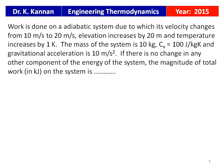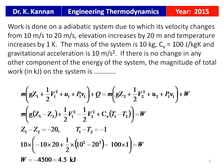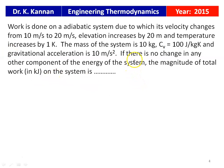This is again from the 2015 question paper. Work is done on an adiabatic system causing its velocity to change from 10 m/s to 20 m/s, elevation increases by 20 m, and temperature increases by 1 Kelvin. The mass of the system is 10 kg, CV = 100 J/kg·K, and gravitational acceleration is 10 m/s². The magnitude of total work done on the system is to be calculated.